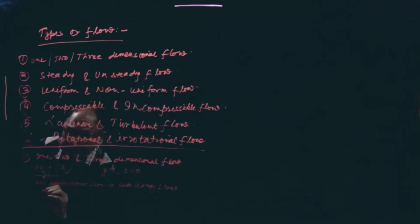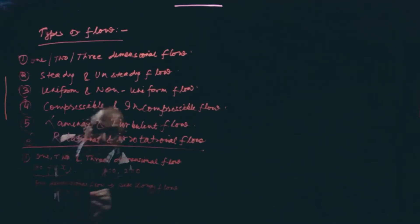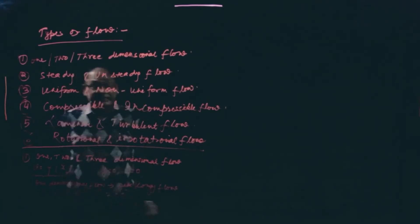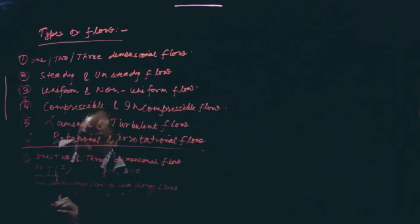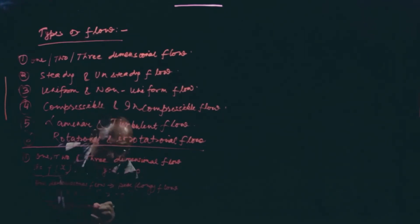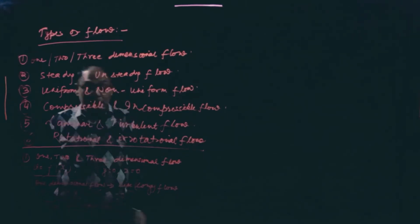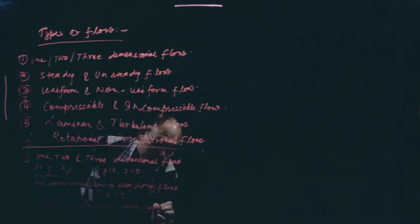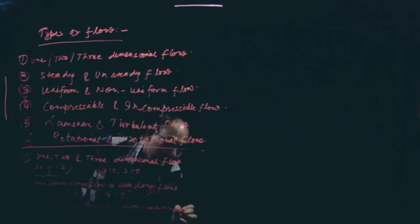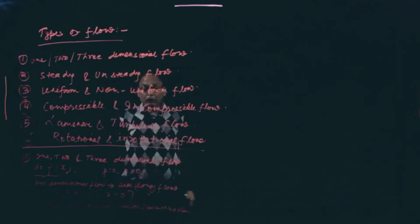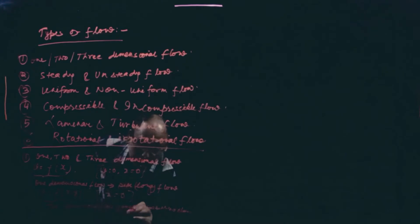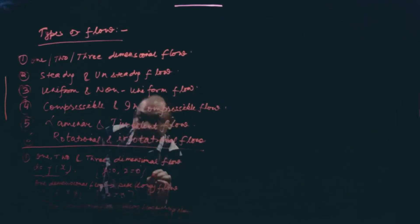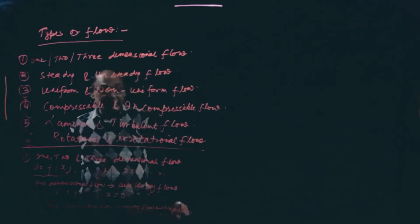If velocity is a function of x and y, and z equals zero — meaning there is no flow in the z direction — that type of flow is called two dimensional flow. An example is viscous flow between two plates, or we can consider open channel flow in a wide channel, where flow is in the x and y directions.